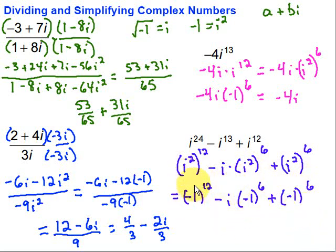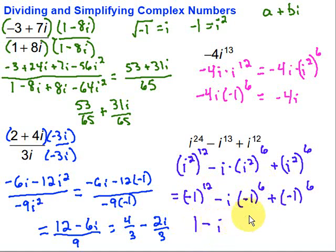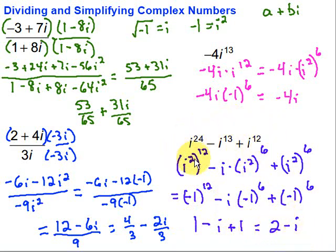A negative to an even power is a positive number. So negative 1 to the 12th is just 1. Negative 1 to the 6th is also just 1, so that piece is minus i. And the last negative 1 to the 6th is 1, giving plus 1. Combining like terms: the 1 and the 1 give us 2, minus i. So this whole expression simplifies to just 2 minus i.